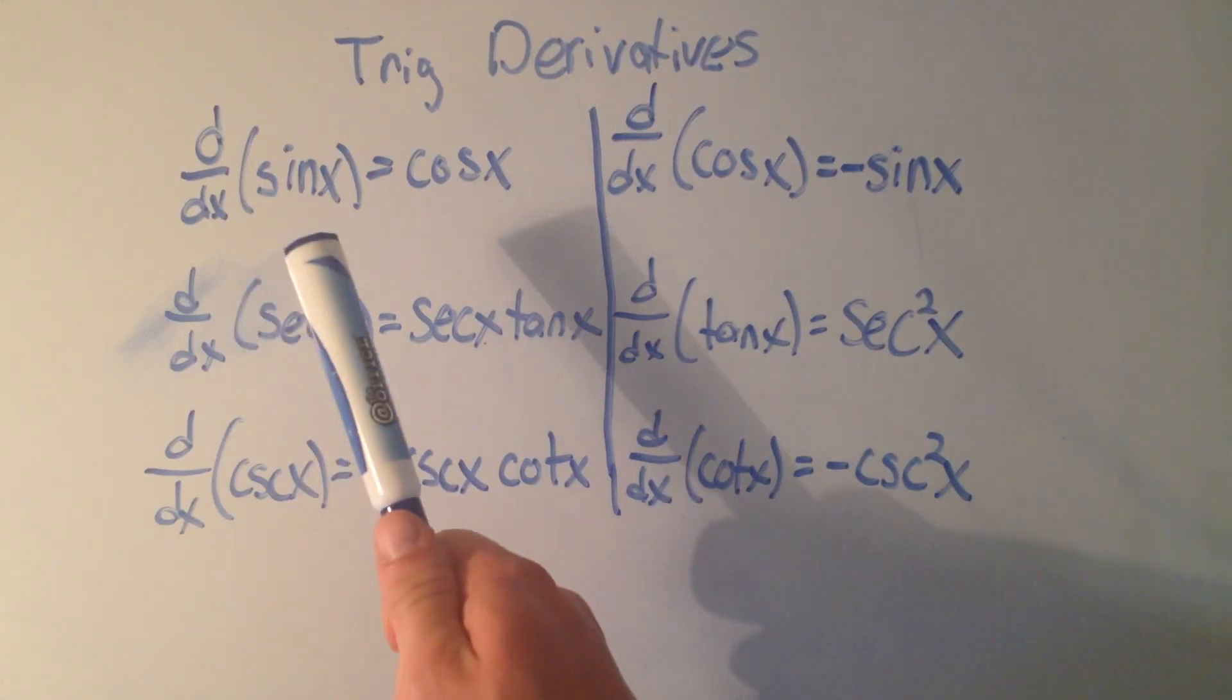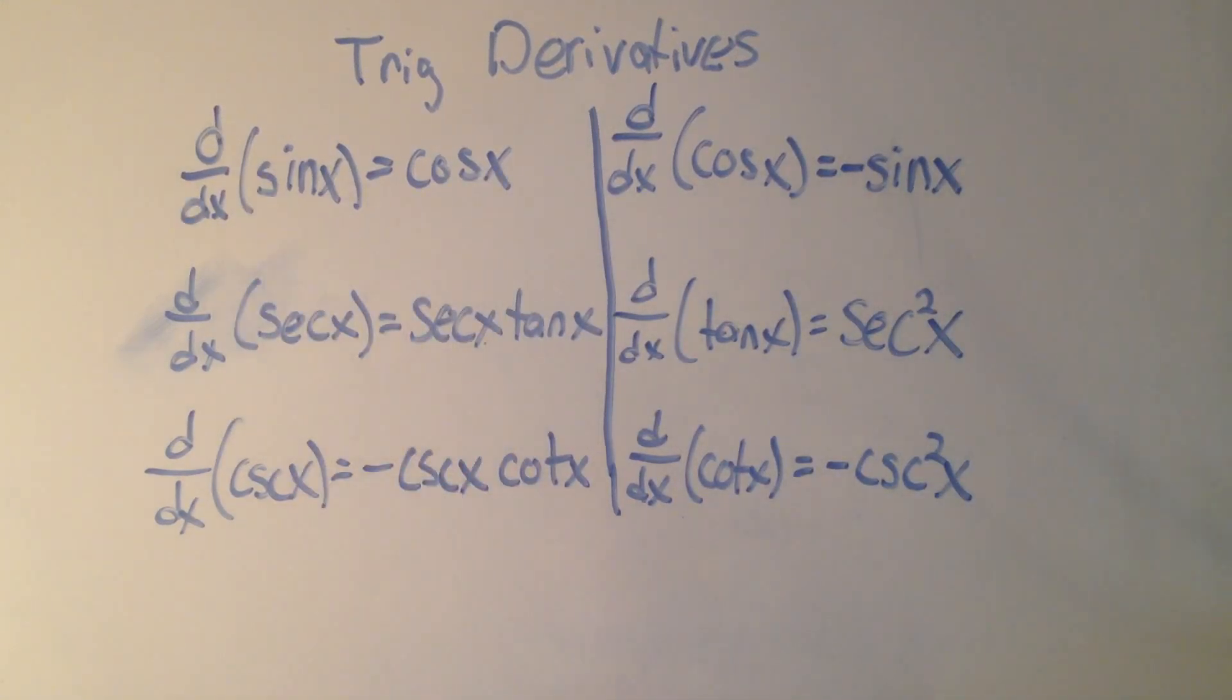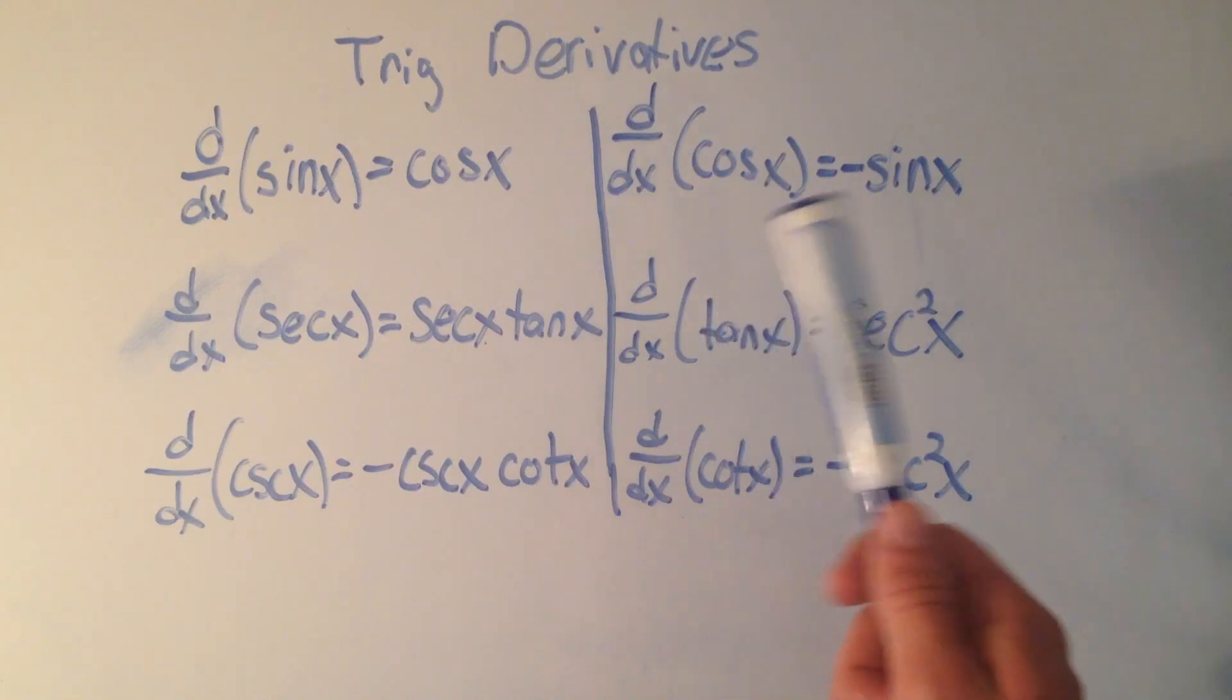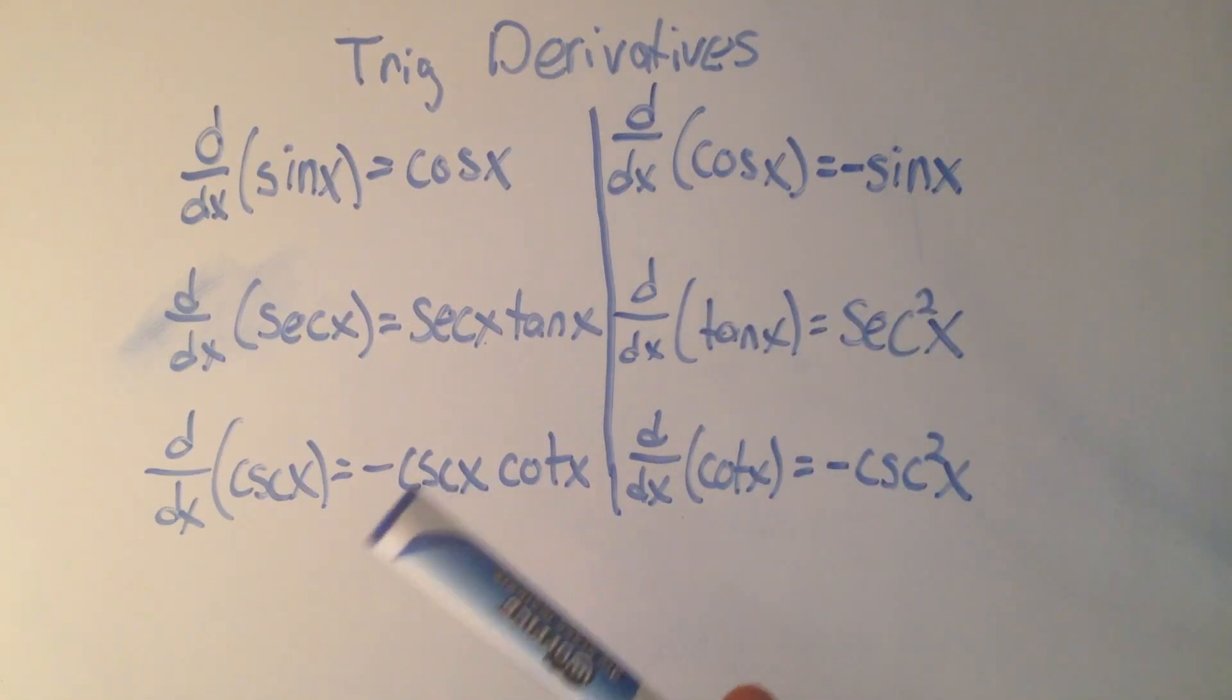The derivative of sine is cosine. That's where we'll start. Derivative of sine is cosine. The derivative of cosine is minus sine. So that's not too hard to remember. Sine and cosine kind of go together. The only thing you have to remember is when you take the derivative of cosine, it's minus sine, not just sine.